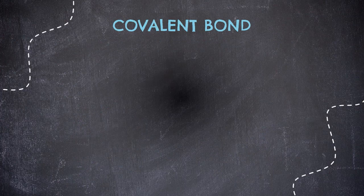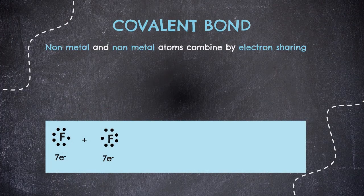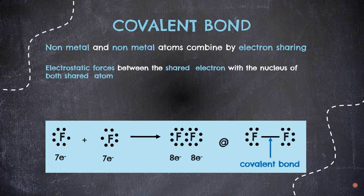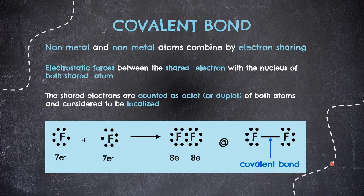Second is covalent bond — a type of bond that holds non-metal atoms via sharing of electrons. For example, two fluorine atoms are both non-metals because they are located on the far right of the periodic table. Each fluorine atom is short one electron to obey the octet rule, so one covalent bond consists of two electrons. These two atoms share each of their electrons, forming electrostatic forces called a covalent bond. The shared electrons are now localized between the two fluorine atoms — two electrons in a covalent bond.